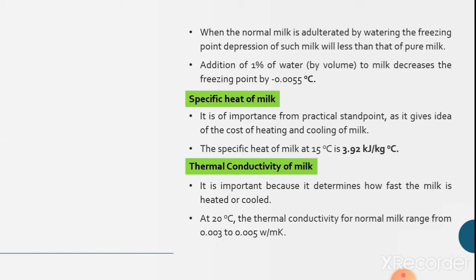The next thermal property of the milk is specific heat. It is of importance from a practical standpoint as it gives idea of the cost of heating and cooling of milk, heating operations such as pasteurization, sterilization. The specific heat of milk at 50 degrees Celsius is 3.92 kilojoule per kg degree Celsius.